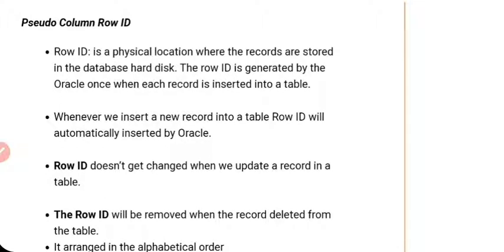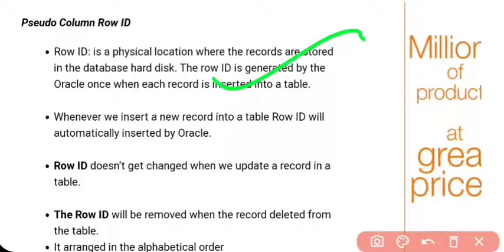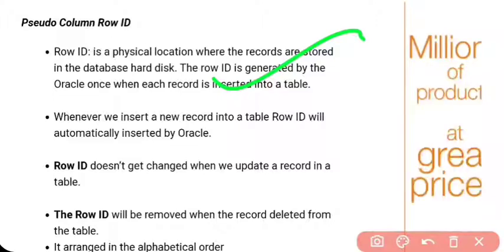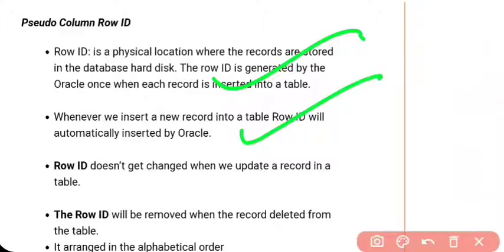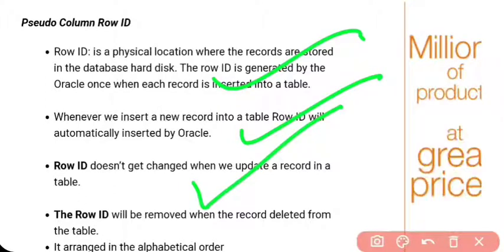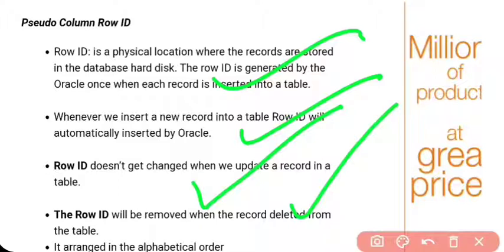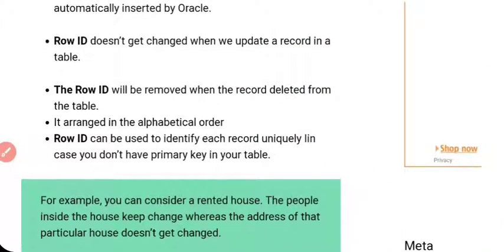ROWID is the physical storage of each and every record. Whenever you insert a new record into a table, a ROWID will automatically be assigned. ROWID doesn't get changed when you update records in a table. The ROWID will be removed only when the record is deleted from that table.